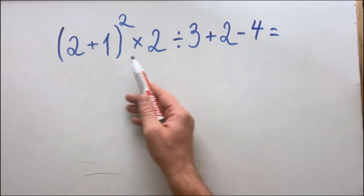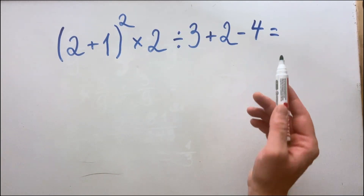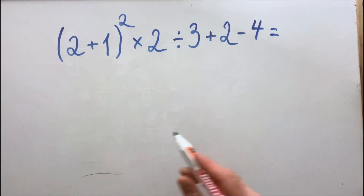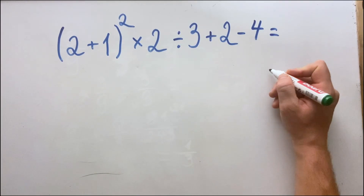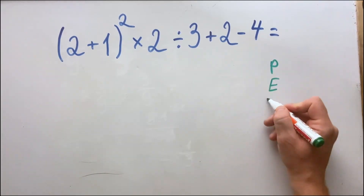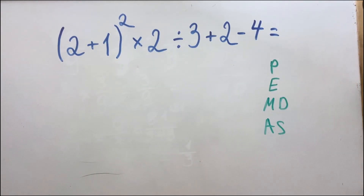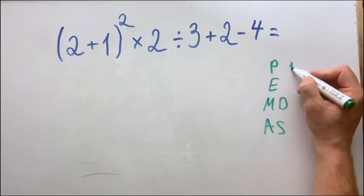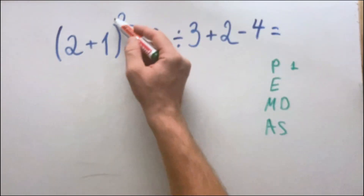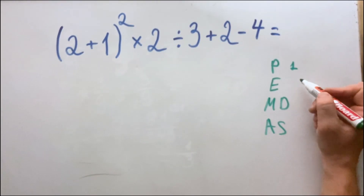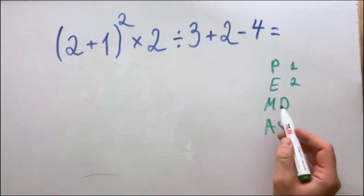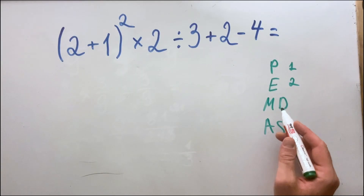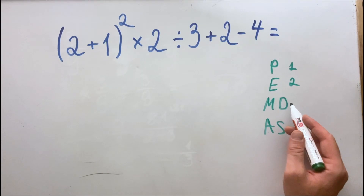Hello everyone, today we have the following equation, which is a perfect example of how to use the order of operations, which is PEMDAS. P stands for parenthesis and must be done first. E stands for exponents and should be done second. M and D stand for multiplication and division.